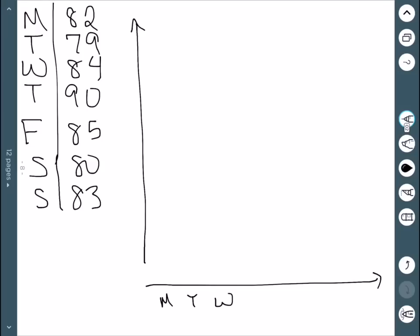So on the x-axis, we have our different days: Monday, Tuesday, Wednesday, Thursday, Friday, Saturday, Sunday. And then our y-axis will have the different temperatures. Here we'll have 90. And then down here, we'll have 80.